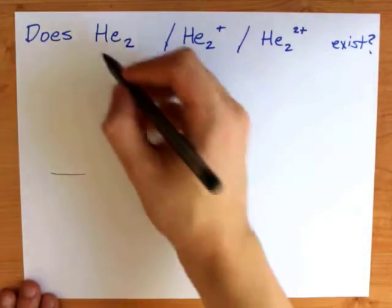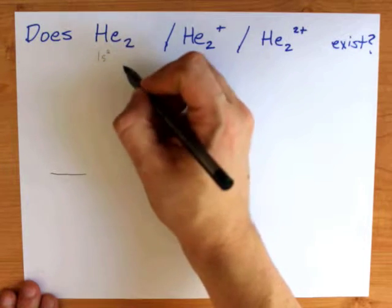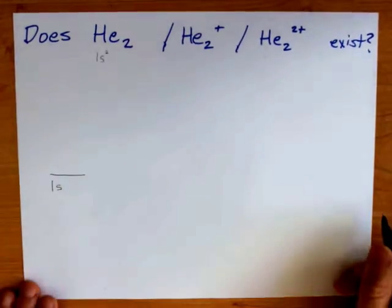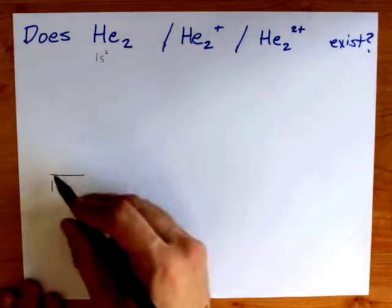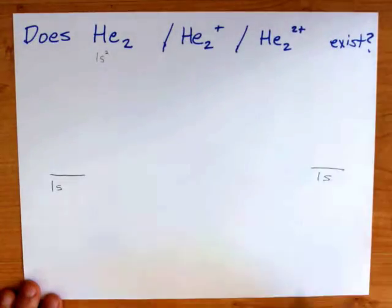Now helium's easy because helium's electron configuration is 1s² and that's it. So that means you have a 1s atomic orbital for one of the heliums and a 1s atomic orbital for the other helium.